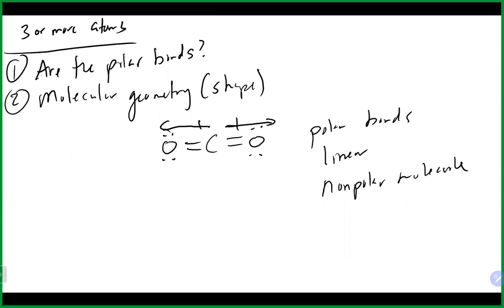Those little dipole arrows are called vectors — they have direction and magnitude. In some cases they add to each other; in other cases they cancel each other out. So it is possible to have a molecule with polar bonds that is actually non-polar as a result of geometry. You have to look at both things when three or more atoms are involved.